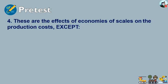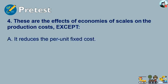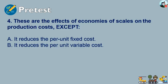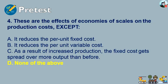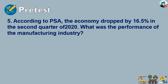Question four: these are the effects of economies of scale on the production cost except — A) it reduces the per unit fixed cost, B) it reduces the per unit variable cost, C) as a result of increased production the fixed cost gets spread over more output than before, or D) none of the above. The correct answer is letter D, none of the above.